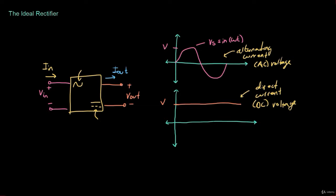Notice that the output is perfectly flat. In practical applications, this isn't the case — normally you would have what's called ripple at the output. Ripple is when the output voltage, instead of being flat, fluctuates. The ripple of the output voltage would be from the maximum to the minimum of that fluctuation. For an ideal rectifier, this ripple is zero volts, meaning the output is perfectly flat. Ripple is sometimes defined in terms of peak-to-peak voltage — the difference between the maximum and minimum of the output voltage. For example, if the output fluctuates between 10 volts and 20 volts, the ripple would be 10 volts peak-to-peak. For an ideal rectifier, because the output is perfectly flat, the peak-to-peak voltage is zero volts.